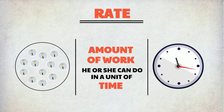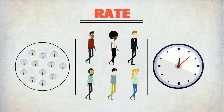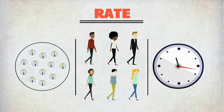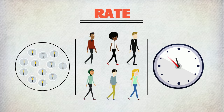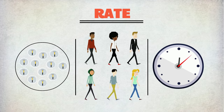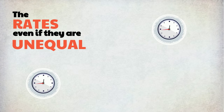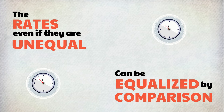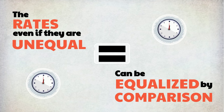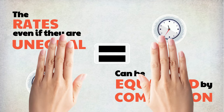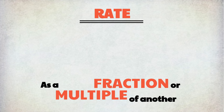The rate at which a person works is the amount of work he or she can do in a unit of time. If all the workers work at equal rates to complete a job, it's easy to find out how long it will take any number of workers to finish the job.